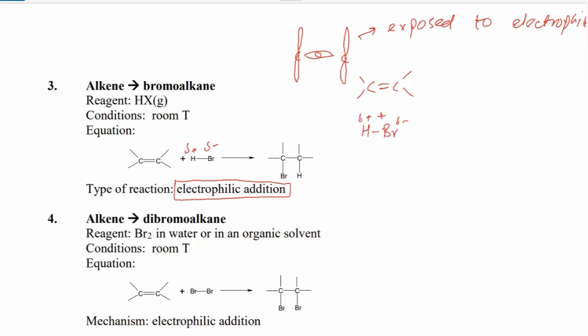The movement is always from negative to positive. The H (partial positive of HBr) attacks the pi bond — electrons are taken from this carbon, which then becomes positively charged (carbocation). In the next step, bromine (which is negative) attacks this carbocation, and you get the final product: carbon bonded to bromine and carbon bonded to hydrogen. The double bond converts into a single bond. This started from the attack of the electrophile, that is why it is called electrophilic addition.